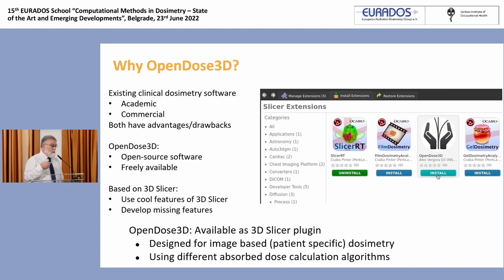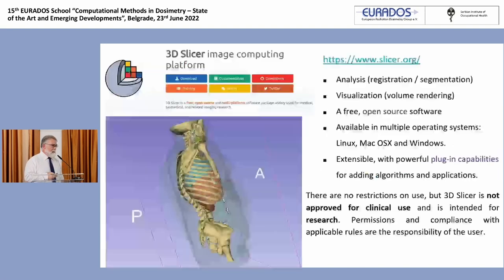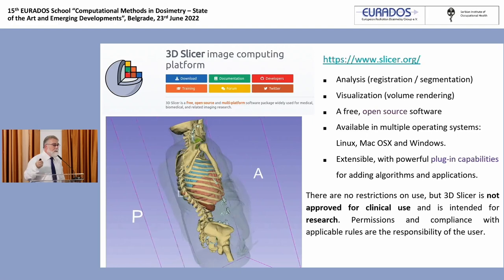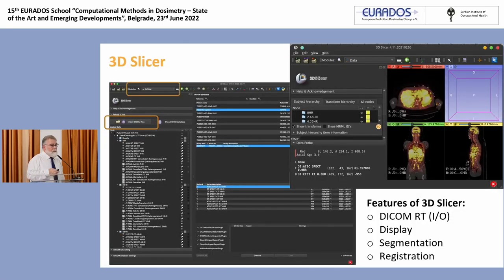3D Slicer is a wonderful platform: you can download the software, it's multi-platform, you can visualize and process images, do registration, do segmentation, and you can extend it — which is also why it was selected to develop OpenDOS 3D. This is what it looks like. I'm not saying it's easy to use — there's a learning curve and it's quite steep — but you have a lot of goodies on the internet, including YouTube tutorials to teach you step-by-step how to use 3D Slicer.